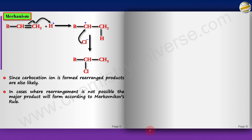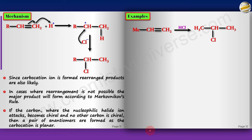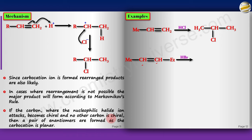If the carbon where the nucleophilic halide attacks becomes chiral and no other carbon is chiral, a pair of enantiomers is formed since a carbocation is planar. Examples: Adding HCl to an alkene — pause, make the product — gives the Markovnikov product. When both carbons of the double bond have the same number of H, use the mechanism. Check which carbocation is more stable: the left is more stable because of greater hyperconjugation; hyperconjugation is a stronger effect than inductive effect. So H goes to the right and Br goes to the left carbon.